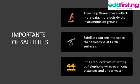What are the importance of satellites? Number one, they help researchers collect data more quickly than instruments on the ground. When you launch a satellite it is able to capture more data and more quickly than any instrument on the ground, because a satellite is in space so it can see everything happening on the Earth. Secondly, satellites can see into space that telescopes at Earth's surface cannot see.